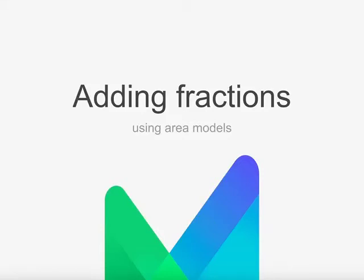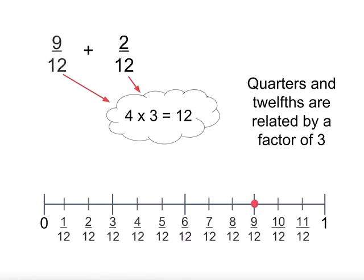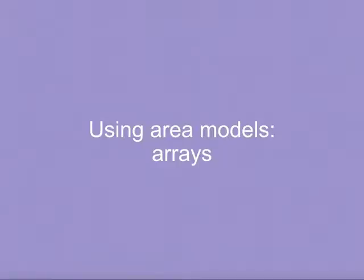Adding fractions using area models. We have learned how to add and subtract fractions using equivalent fractions and a number line. This one shows how three quarters is equivalent to nine twelfths, and so when we add two more twelfths, we get eleven twelfths altogether. Now we will look at area models to show addition of fractions.